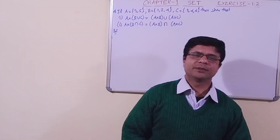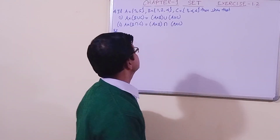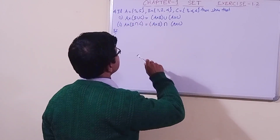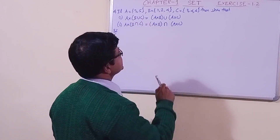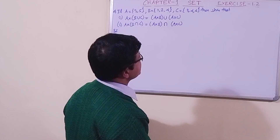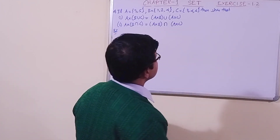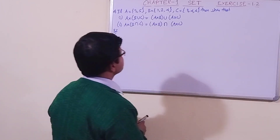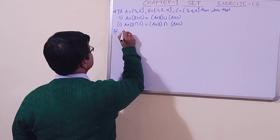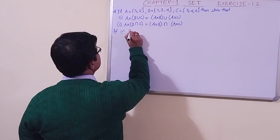Today we have taken question number four. Let us read the question: if A has two elements, 3 and 5; B has three elements, 1, 2, and 4; and C has again three elements, 3, 4, 6. We need to show the given identities. Let us do number one first.